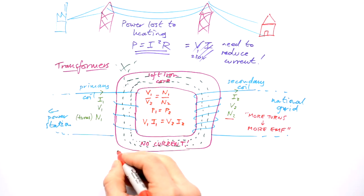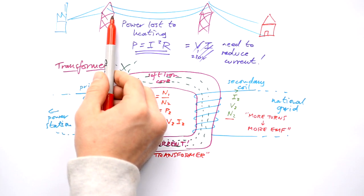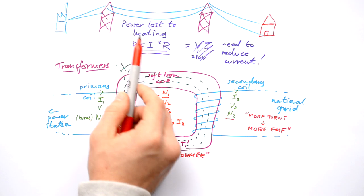This is a step-up transformer because it's stepping up the voltage. By stepping up the voltage before it goes into the national grid, it's actually reducing the current, therefore reducing the heating effect in the wires, reducing the energy power loss due to heating in the wires.